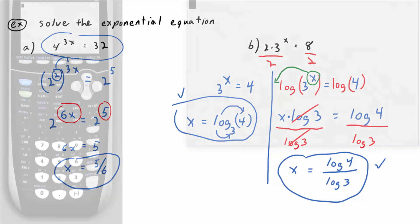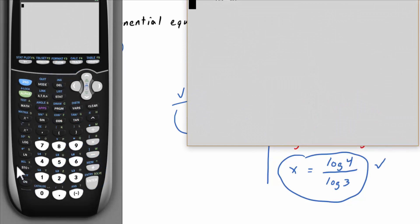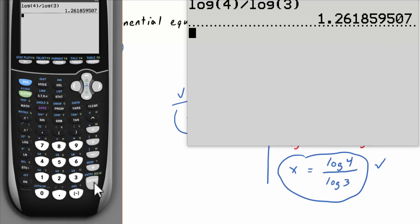Would it be easy enough to get a decimal approximation of that? Yeah, let's practice that. So, log button is almost a little further than midway down from the top on the left-hand side column of buttons. So, log of 4 divided by log of 3. You get about 1.26 if you round to two decimal places.